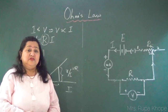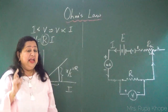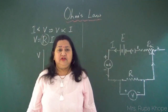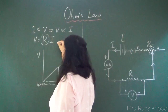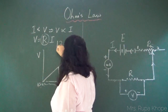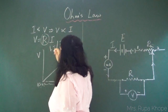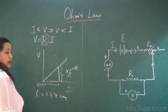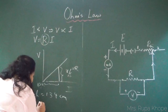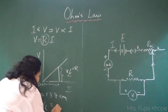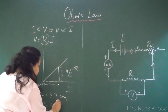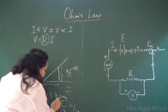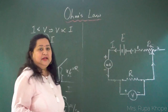Now you know the resistance of the wire. The aim of the experiment is to find resistance per unit length. If the wire is 134 cm long and you get a resistance of say 25 ohms, then resistance per unit length = 25 ohms / 134 cm (ohms per centimetre). Calculate this — that is the result.